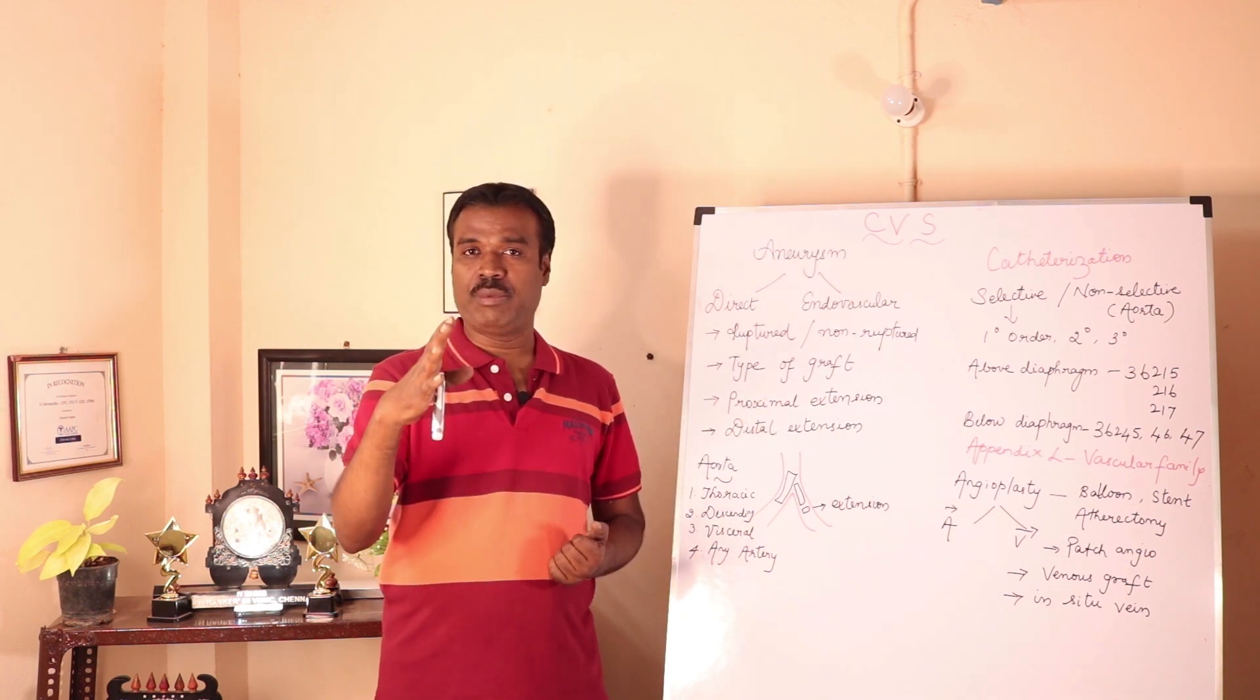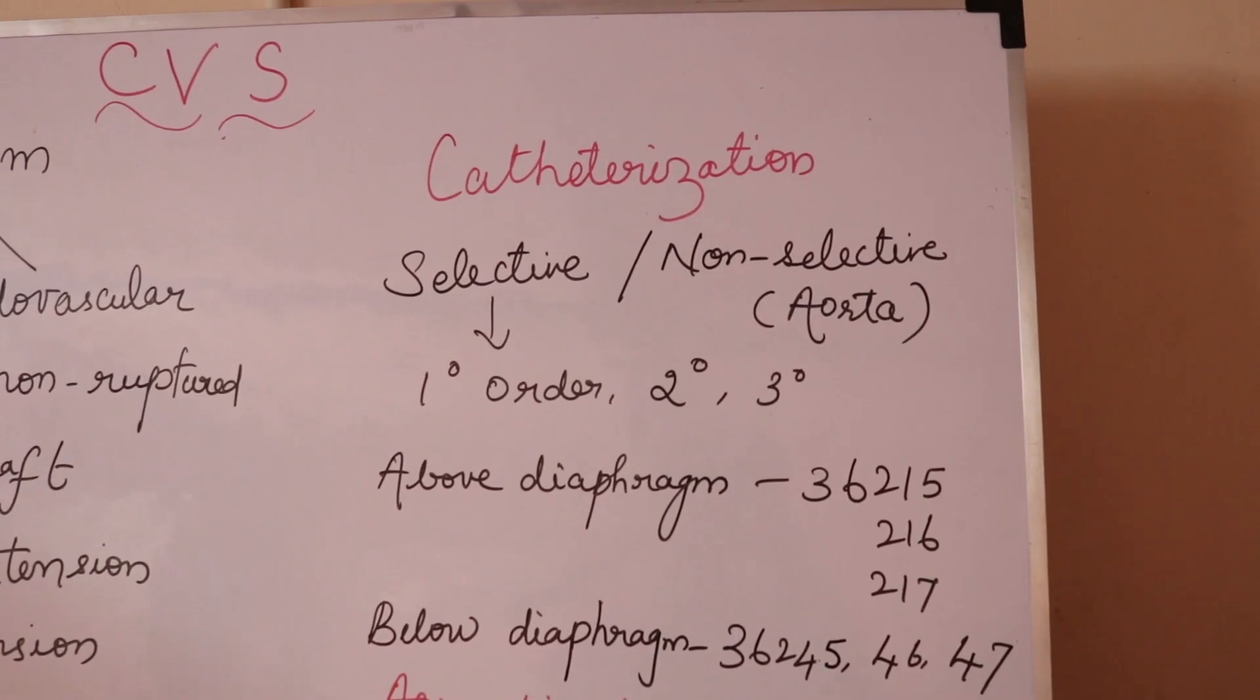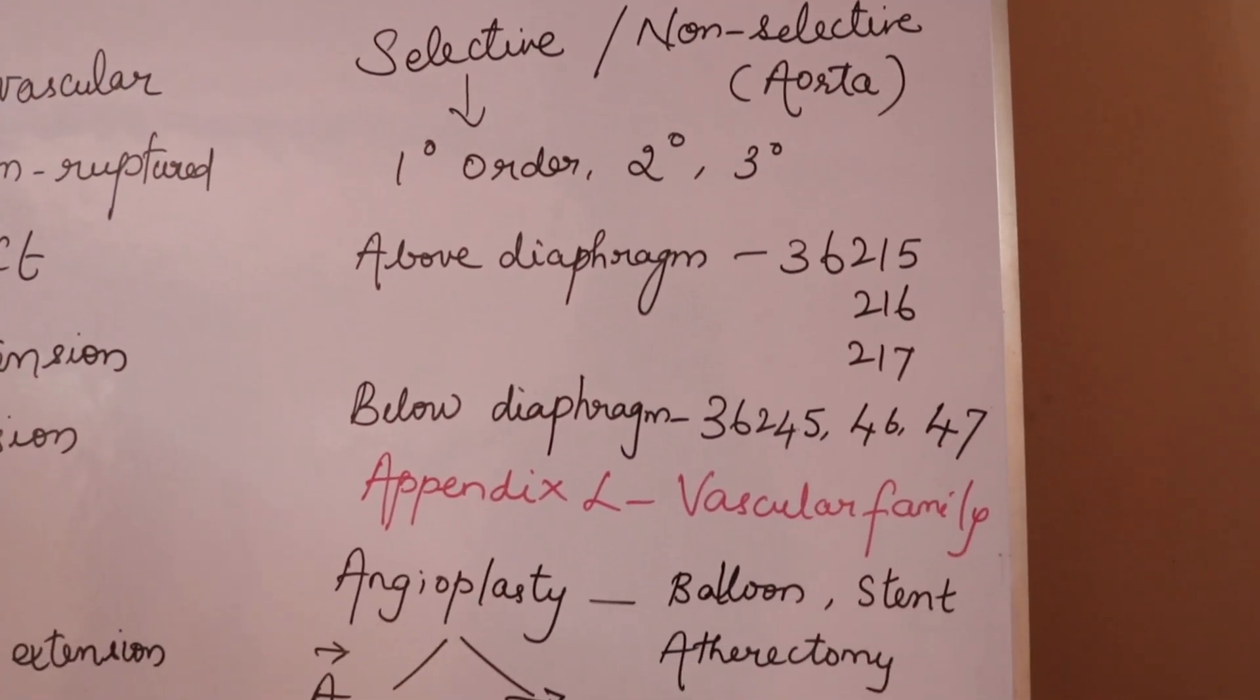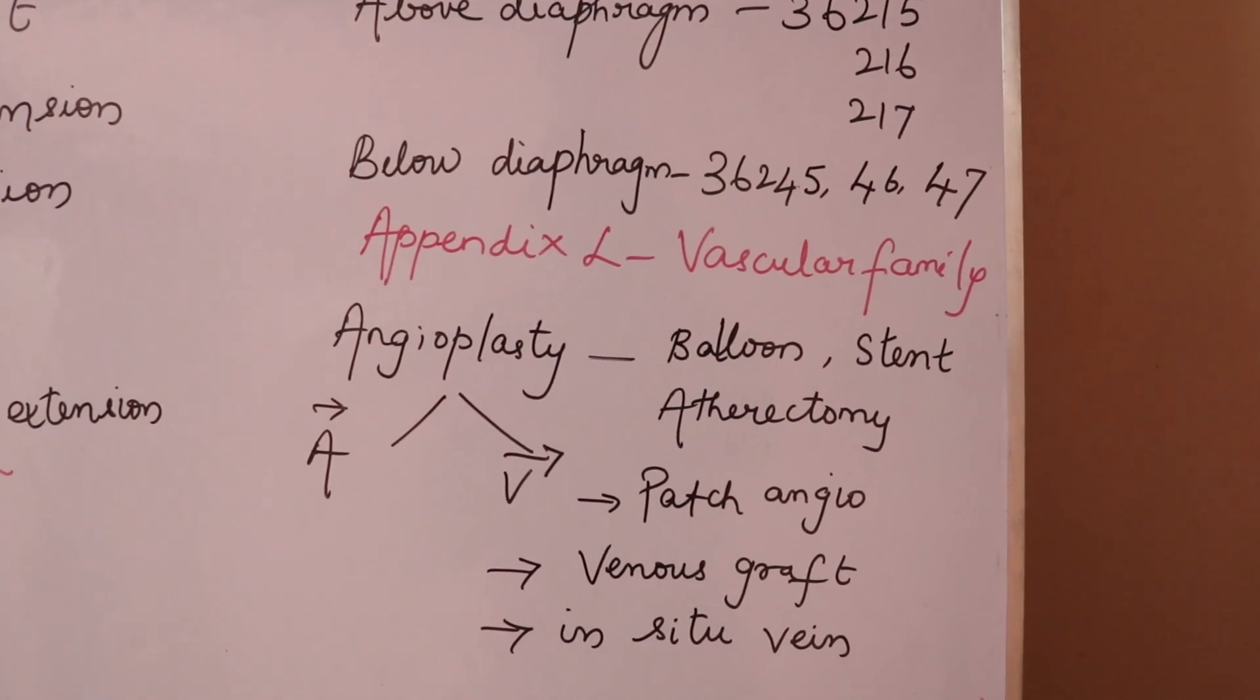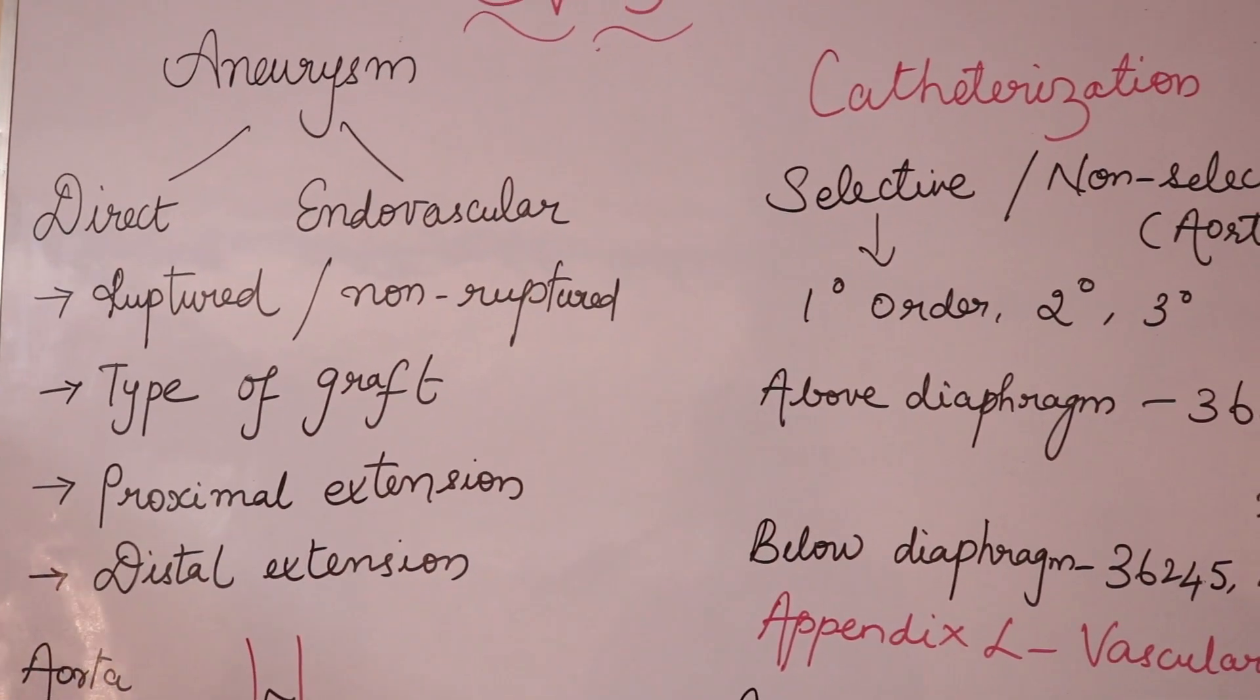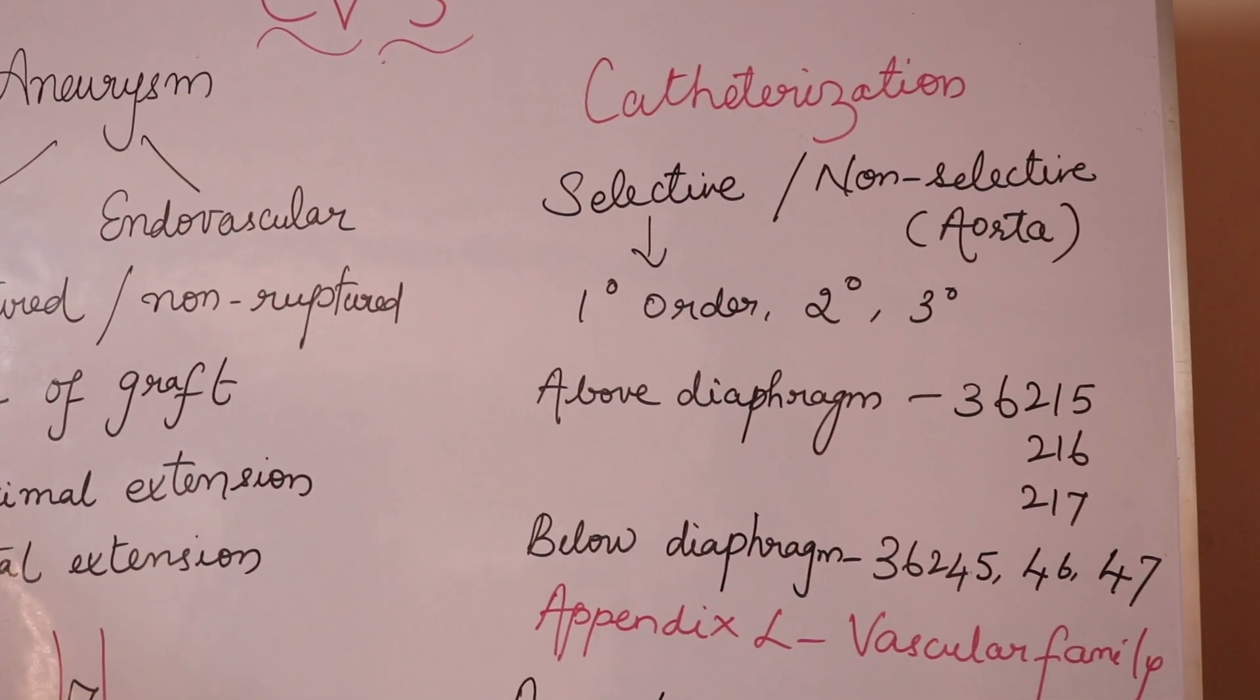Coming back to angioplasty, it can be both arterial and venous, meaning you can repair the artery or the vein itself. When you are going to repair the artery, it becomes arterial angioplasty or a venous angioplasty.